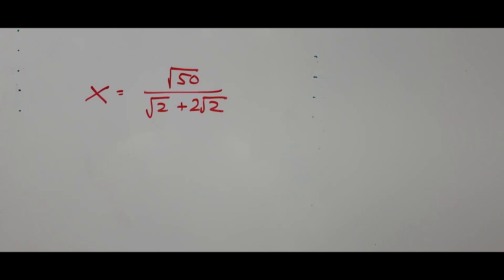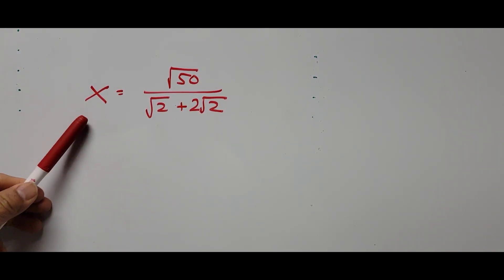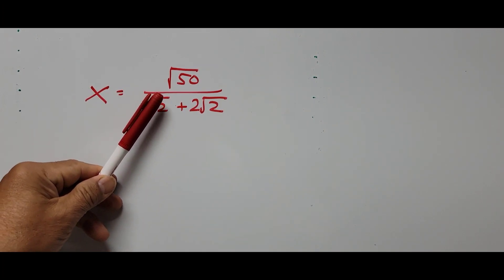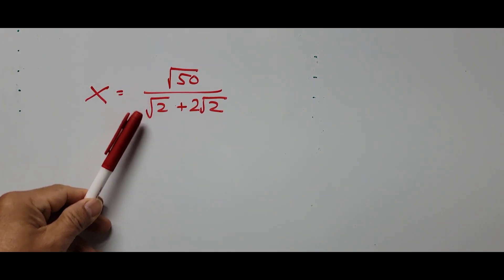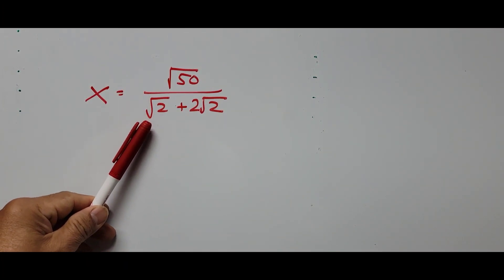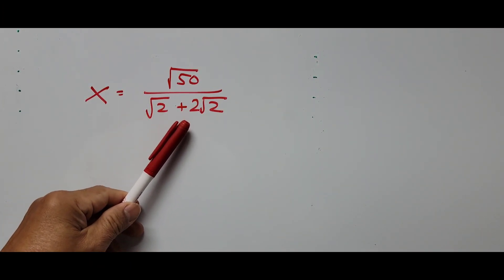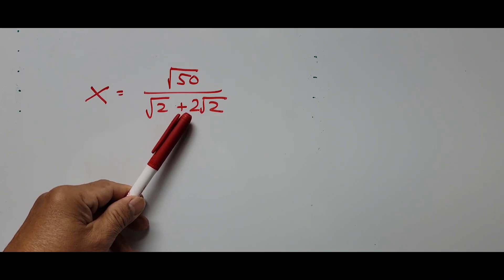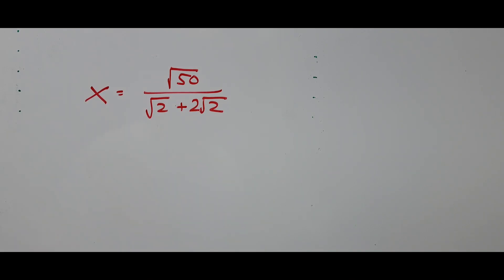Welcome to Casciano Easy Math! Today's video is about solving the value of x: square root of 50 divided by square root of 2, plus square root of 2 multiplied by 2.